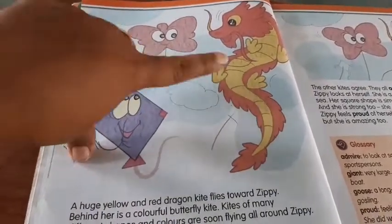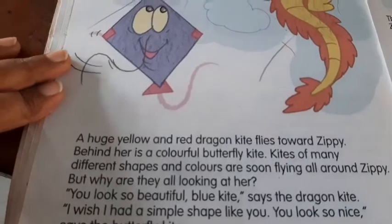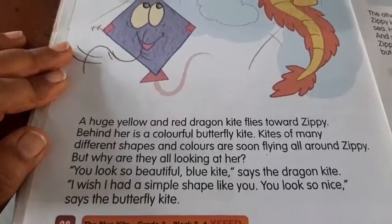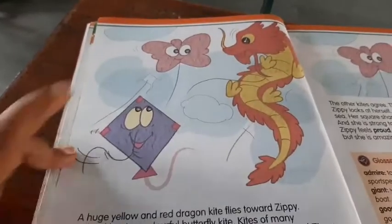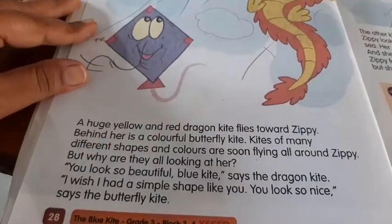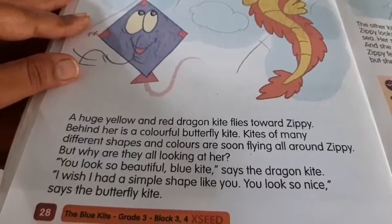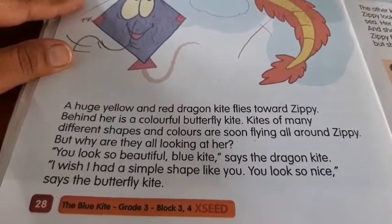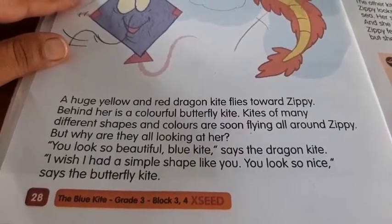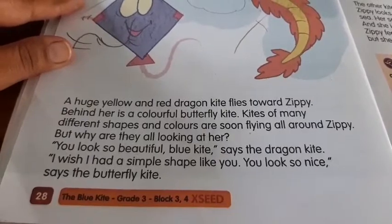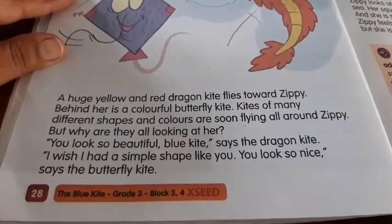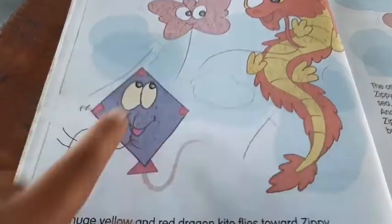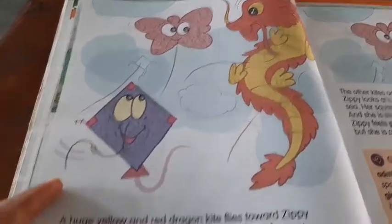You can see here two kites and Zippy — total three kites. A huge yellow and red dragon kite flies towards Zippy. Behind her is a colorful butterfly kite. Different shapes and colors are flying all around Zippy. But why are they all looking at her? You look so beautiful blue kite, says the dragon kite. I wish I had a simple shape like you. You look so nice, says the butterfly kite.